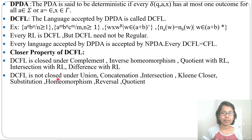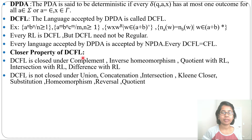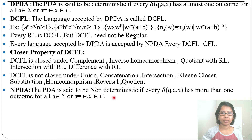DCFL is not closed under union, concatenation, intersection, Kleene closure, substitution, homomorphism, reversal, and quotient. This is not very important because questions are rarely asked about DCFL; questions are asked about context-free language. These are just the closure properties of DCFL only.